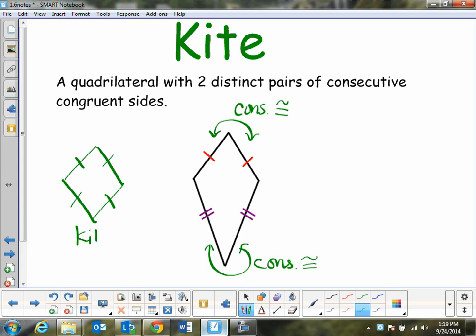Something that looks like this. This is also referred to as a kite. This is going to be an even more special quadrilateral because they all happen to be congruent. However, it still falls under this definition because these two right here, these are consecutive and congruent.